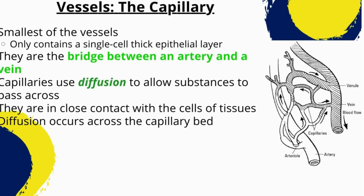Capillaries are tiny blood vessels that connect arteries and veins, allowing the exchange of oxygen, nutrients, and waste products between the blood and the cells and tissues of the body. They are the smallest and most numerous blood vessels in the circulatory system. Capillaries are so small that they are only one cell thick, which allows for the diffusion of oxygen and other substances across their walls. The walls are composed of a single layer of endothelial cells, tightly packed together to form a continuous layer, and are semi-permeable, allowing the exchange of substances between the blood and the tissues.